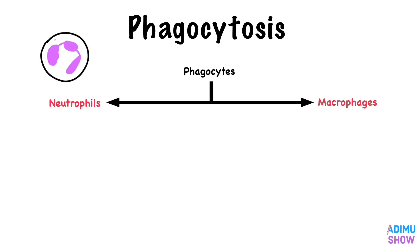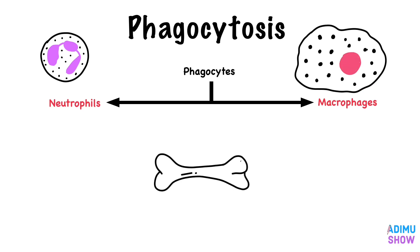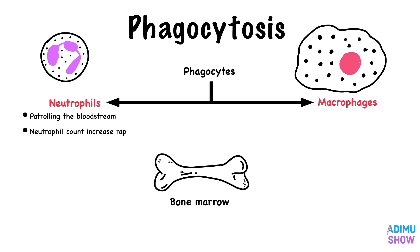Phagocytes include neutrophils and macrophages, which are produced throughout life in the bone marrow. They remove dead cells as well as invasive microorganisms. Neutrophils patrol the bloodstream and migrate into tissues by squeezing through the walls of capillaries. If there is an infection, neutrophil count increases rapidly in the bloodstream, but they are short-lived cells.